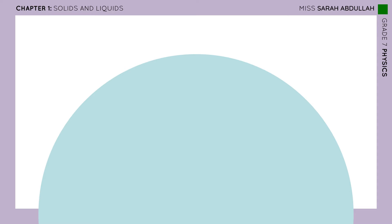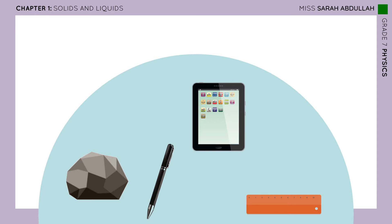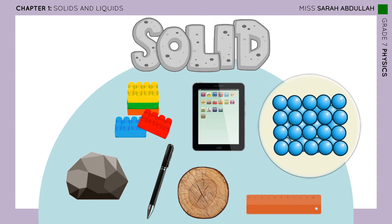When we say solid, what is the first thing that comes to your mind? Let's brainstorm. Maybe a rock? Maybe your pen, a ruler, or a tablet? How about some building blocks or some wood? All these objects seem so random, but they all have one thing in common — they are all solids.